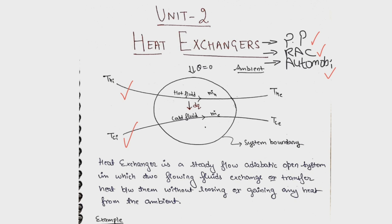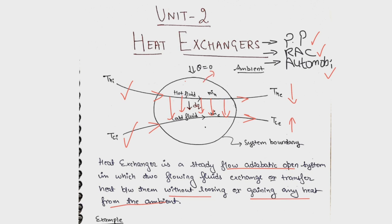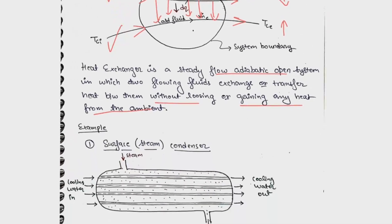The hot fluid comes in and goes out; similarly, the cold fluid comes in and goes out. During this process, there is an arrangement for heat transfer from the hot fluid to the cold fluid, such that the temperature of the hot fluid decreases and the temperature of the cold fluid increases. A heat exchanger is a steady flow adiabatic open system in which two flowing fluids exchange heat without losing heat to the ambient — q_out is zero. Therefore, heat loss by the hot fluid equals heat gain by the cold fluid.